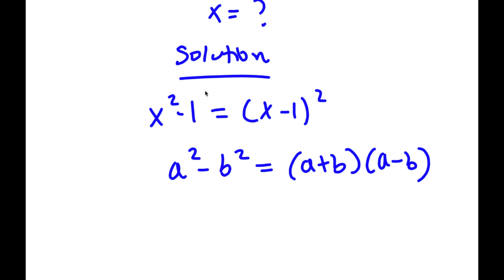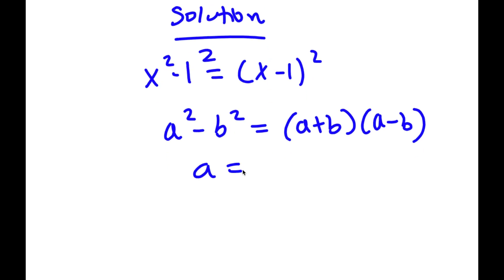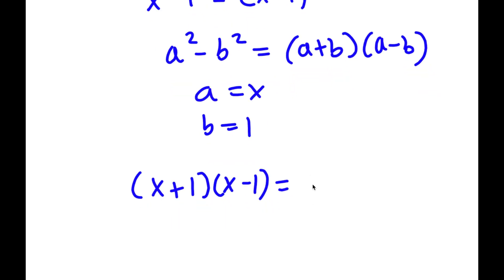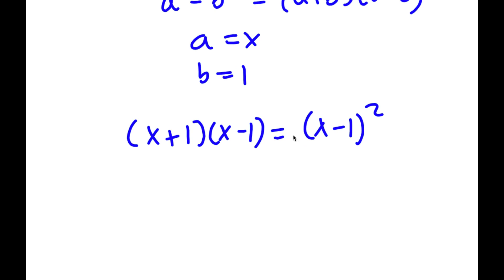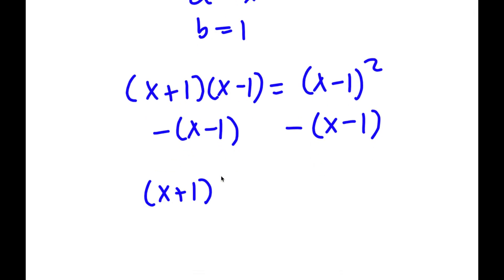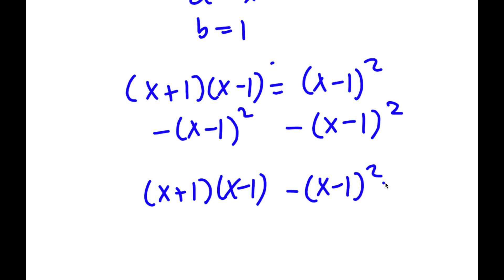So in this case, x squared minus 1 — 1 is the same thing as 1 squared — so a is equal to x and b is equal to 1. So now I have x plus 1 times x minus 1, which is equal to x minus 1 squared. Now, if I subtract x minus 1 squared from both sides, I get x plus 1 times x minus 1 minus x minus 1 squared is equal to 0.